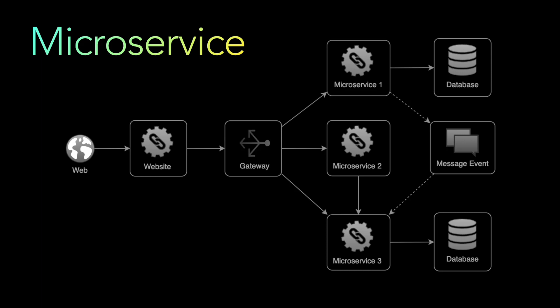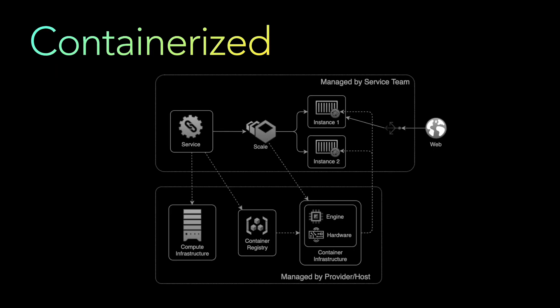Now coming to the modern architecture patterns primarily provided by cloud platforms — the first one of those is the containerized application architecture. Containerized architectures package software services and their dependencies into a single isolated unit called a container. This is done to ease portability and it offers high scalability and availability options.